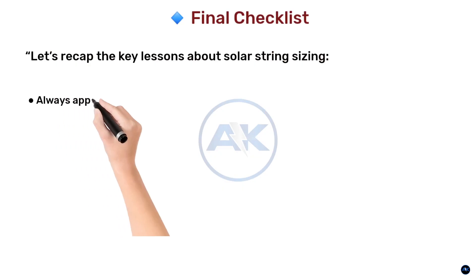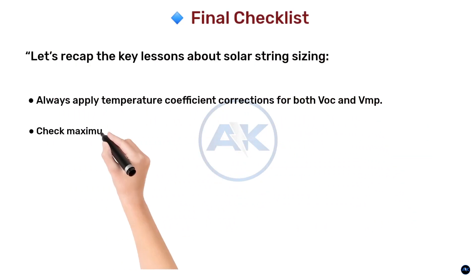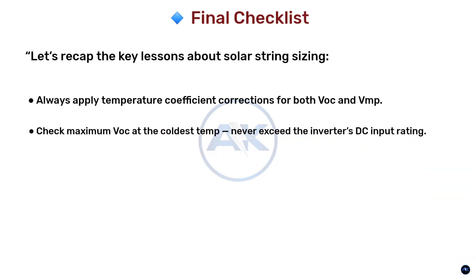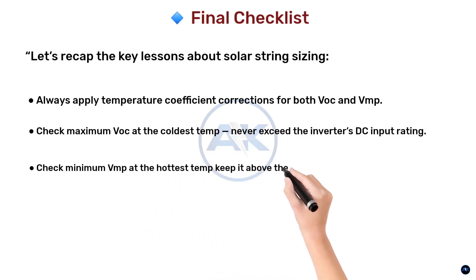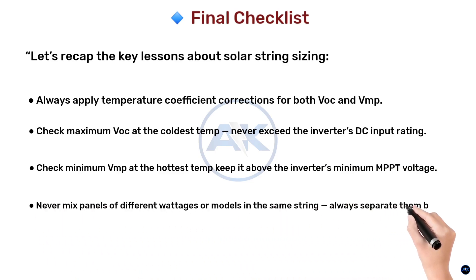Let's recap the key lessons about solar string sizing. Always apply temperature coefficient corrections for both VOC and VMP. Check maximum VOC at the coldest temperature — never exceed the inverter's DC input rating. Check minimum VMP at the hottest temperature — keep it above the inverter's minimum MPPT voltage. Never mix panels of different voltages or models in the same string — always separate them by MPPT input.